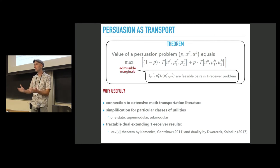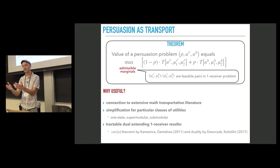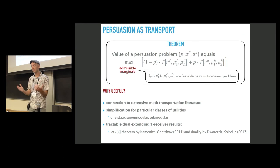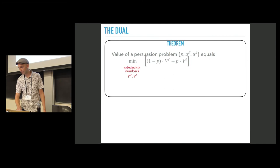Optimal transportation, a connection to optimal transportation always brings a tractable dual problem. And here we find this dual and it turns out that the dual problem to this maximization extends several results that we know in one receiver setting. First of all, it extends Kamenica theorem by Kamenica and Genskov, the one that I mentioned. And also it extends the duality representation obtained by Dvorak and Kalatilin.